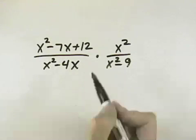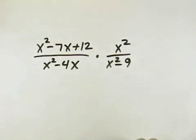Here we want to perform the indicated operation of multiplication and then simplify our answer. Before we do that though, we'd like to cancel like factors.